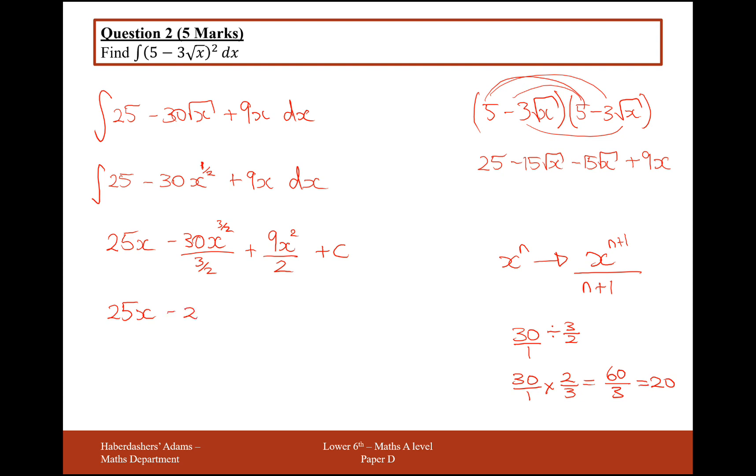Minus 20x to the 3 over 2, plus 9 over 2x squared, plus c.